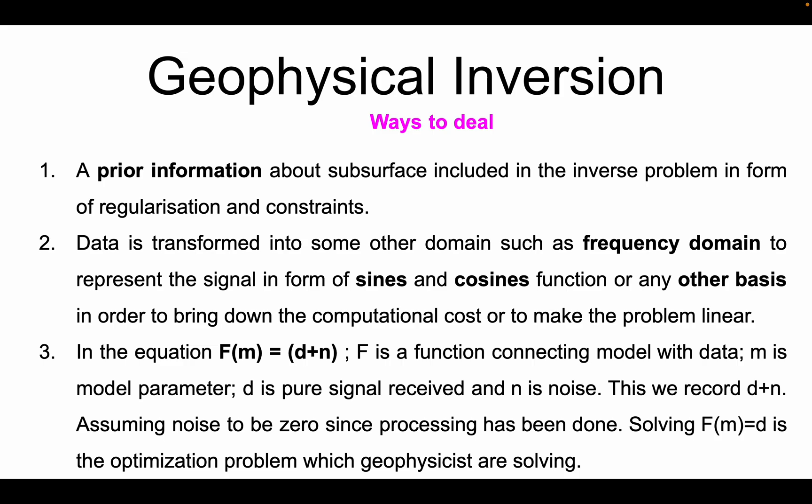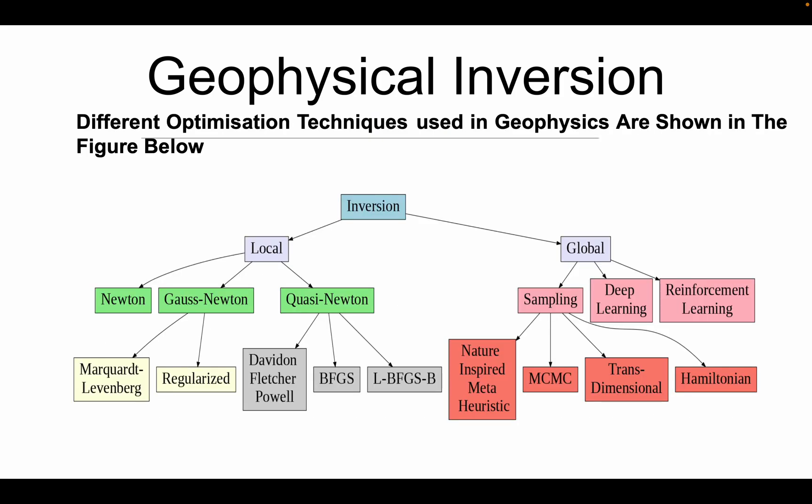Once we have the equation F(m) = d + n, where n is the noise in the data and F is the function we are using physics to model, we assume that through processing we have gotten rid of the noise. So we only have the data, and for solving F(m) = d we have different kinds of mathematical tools, broadly categorized into local and global methods.